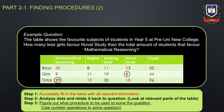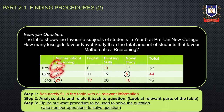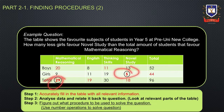We also have to determine the total number of students who favour mathematical reasoning. To do this, we need to first fill in the first row of the table. The number of boys who favour thinking skills is 30 minus 19, which equals 11. The number of boys who favour mathematical reasoning is 52 minus 13 minus 11 minus 8, giving us 20 boys. From that, the total number who favoured mathematical reasoning is 20 plus 9, which equals 29. So how many less girls favour novel study than the total who favour mathematical reasoning? We do 29 minus 5, which equals 24.